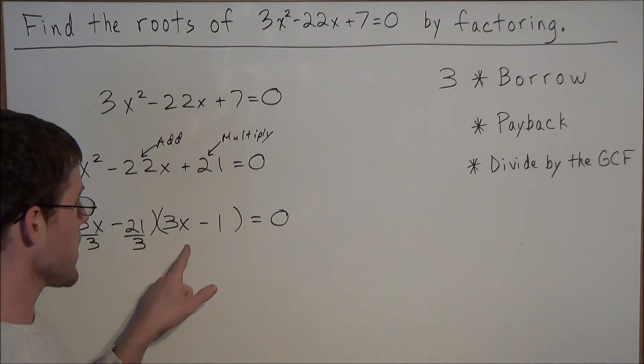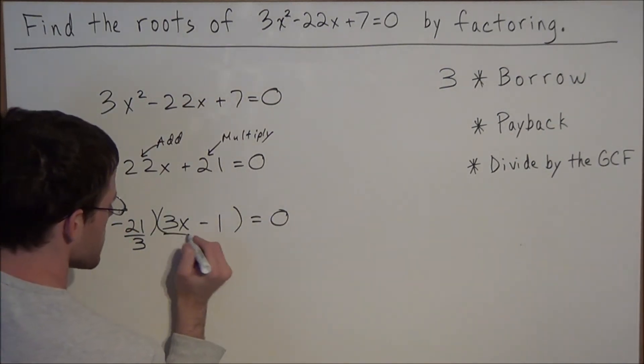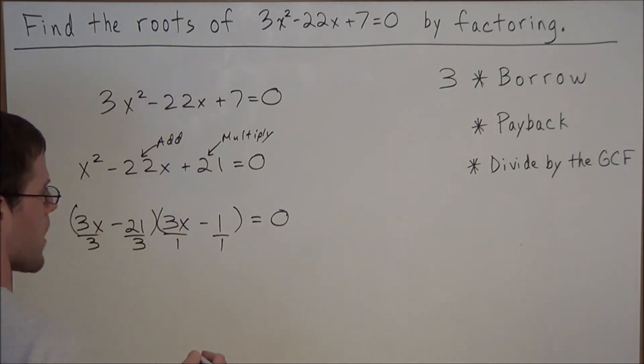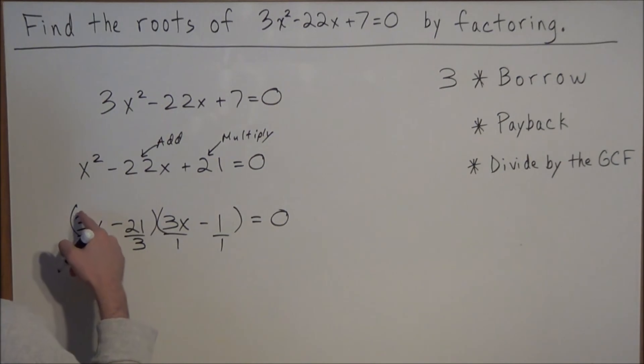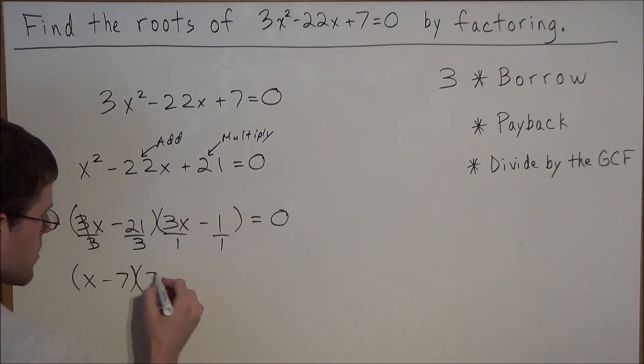But now for 3x and negative 1, the greatest common factor is 1. We are going to divide each of these by 1. Now we simplify: 3 divided by 3 will cancel, so we have x minus 21 divided by 3 is 7. For the next binomial, 3x divided by 1 is 3x, and minus 1 divided by 1 is 1 equals 0.